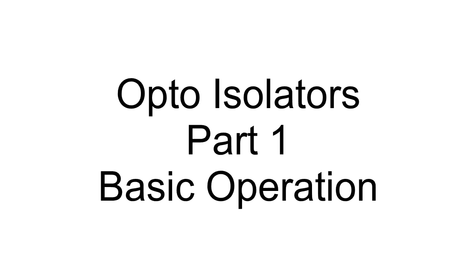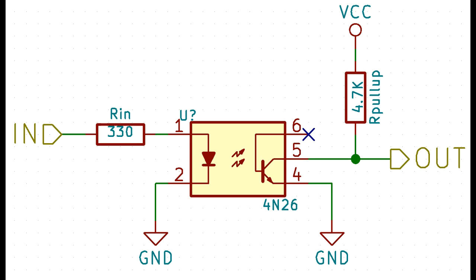LAN boards presents opto isolators part one basic operation. The basic opto amp test circuit consists of a drive circuit driving the LED with some series resistor to limit the current and set the current, and a collector pull-up resistor on the output side.